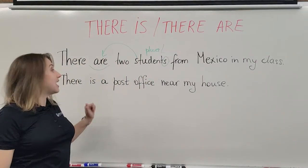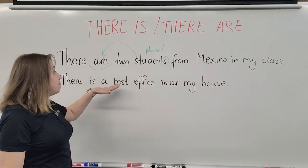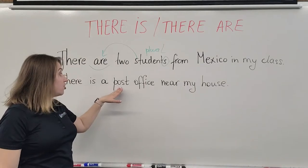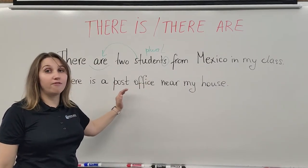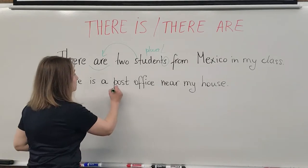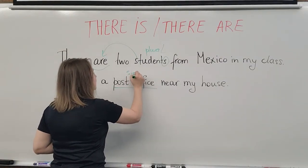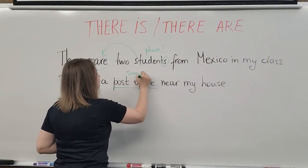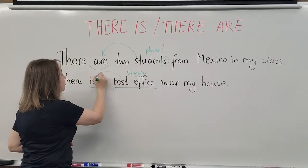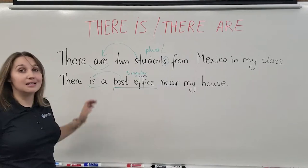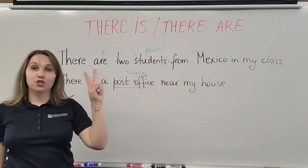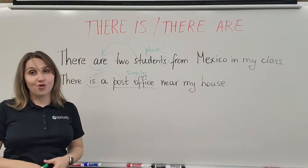The next example: 'There is a post office near my house.' We talk here about a post office, which is one thing — it's a singular form. Post office: singular, one — and because of that we are using the form 'is'. 'Is' for one; 'there are' for two or more things — that's the plural form.